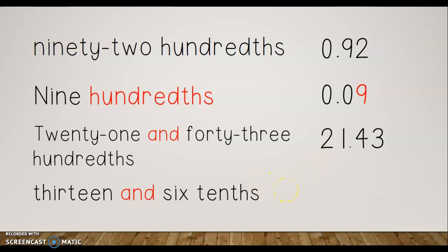Let's try '13 and six tenths.' My 13 is my whole number, 'and' is my decimal point, and then I have six tenths behind it. So I write 13 in front, decimal point for 'and,' then six in the tenths place. The six is in the tenths place — I don't have any hundredths, so I'm not going to put anything there.